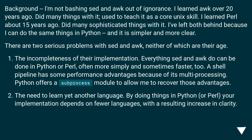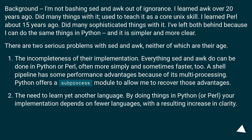Background: I'm not bashing Sed and Awk out of ignorance. I learned Awk over 20 years ago, did many things with it, and used to teach it as a core Unix skill. I learned Perl about 15 years ago and did many sophisticated things with it. I've left both behind because I can do the same things in Python, and it is simpler and more clear. There are two serious problems with Sed and Awk, neither of which are their age: the incompleteness of their implementation, and the need to learn yet another language. Everything Sed and Awk do can be done in Python or Perl, often more simply and sometimes faster. A shell pipeline has some performance advantages because of its multiprocessing, but Python offers a subprocess module to recover those advantages. By doing things in Python or Perl, your implementation depends on fewer languages, with a resulting increase in clarity.